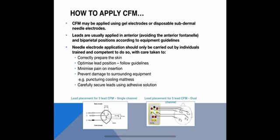So how do we apply CFM? CFM can be applied using gel electrodes like ECG leads, or disposable subdermal needle electrodes. The leads are applied in an anterior or biparietal position — basically placed on the sides of the head — according to the specific guidelines for the equipment being used. Some CFM equipment requires three leads; others require five, depending on the equipment.